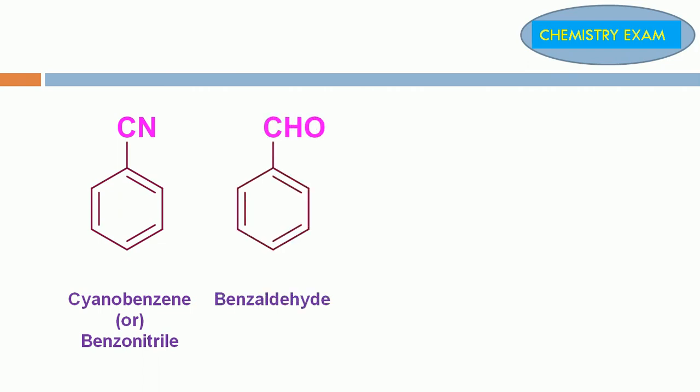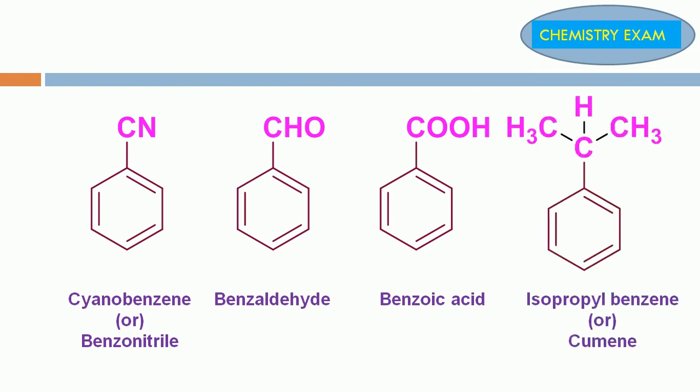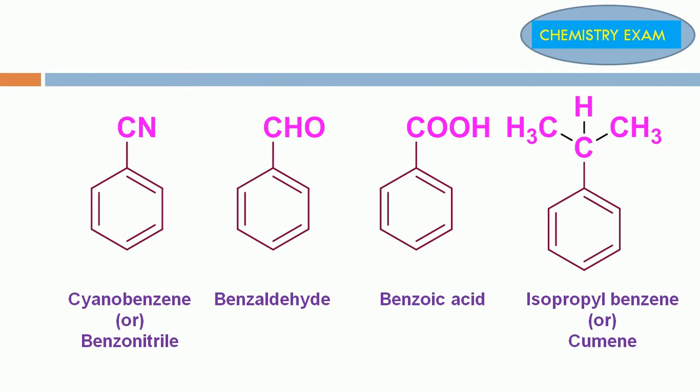CHO, which means aldehyde group, substituted in benzene ring is called benzaldehyde. COOH is the acid group. Carboxylic acid substituted in benzene ring is called benzoic acid. Isopropyl group substituted in benzene ring is called isopropylbenzene or cumene.